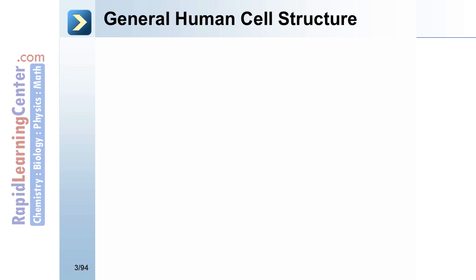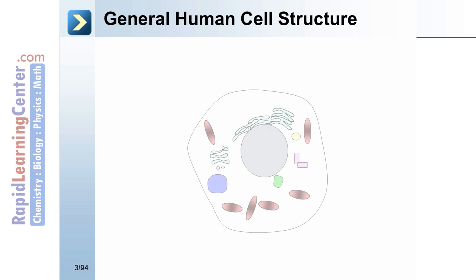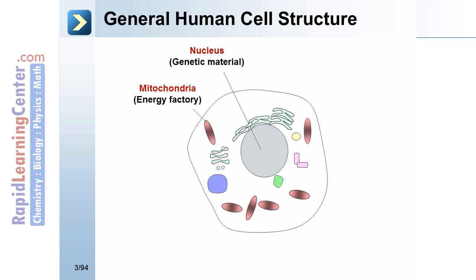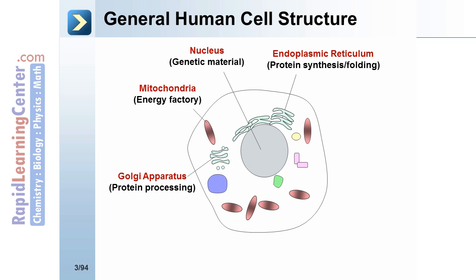General human cell structure. This is a generalized structure of the human cell. It has a nucleus in which genetic material is kept, mitochondria which produces energy, endoplasmic reticulum for protein synthesis and folding, and Golgi apparatus for protein processing.